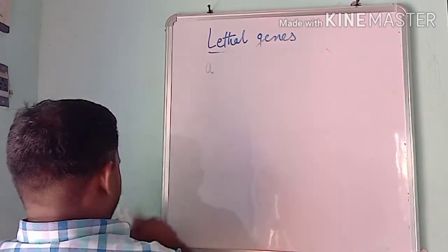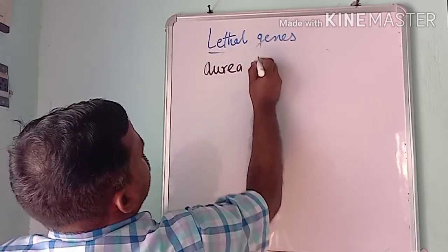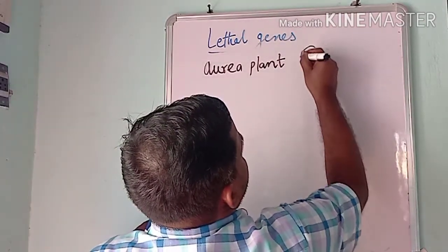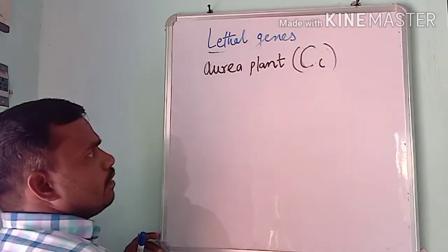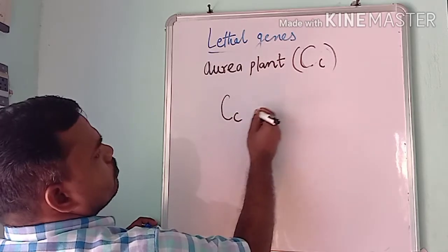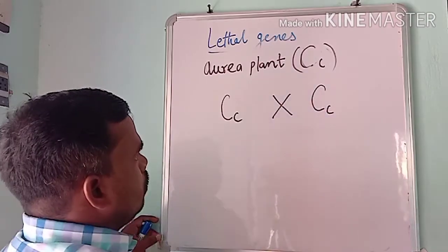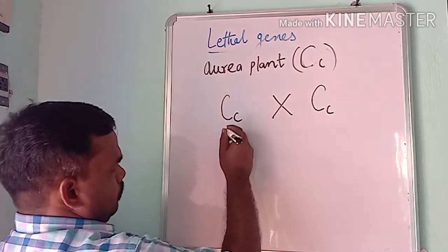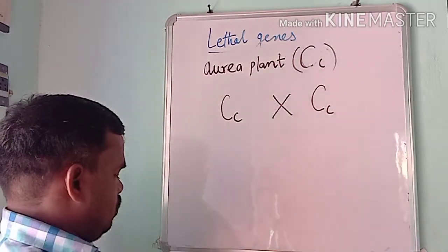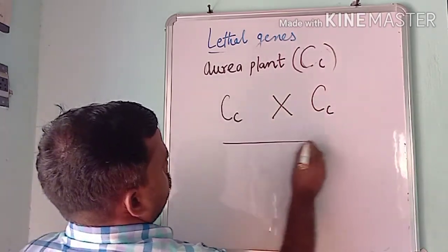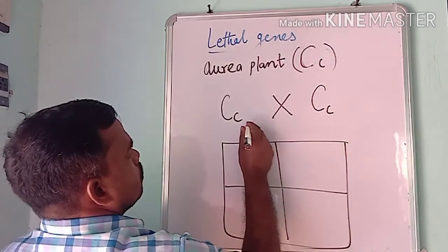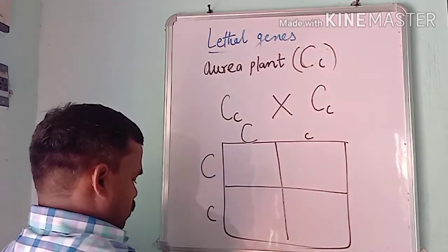Let's take the aurea plant. Aurea plants have alleles capital C and small c — one dominant and one recessive. When these aurea plants are crossed with each other, let's see what happens in the F2 generation.